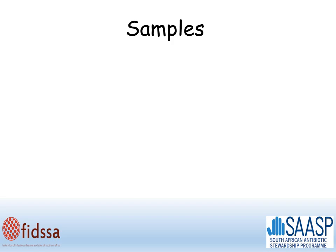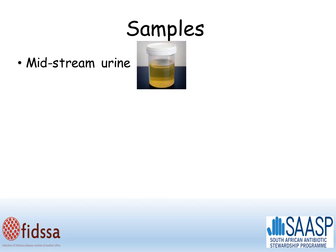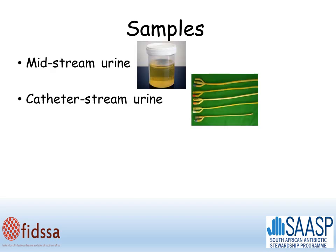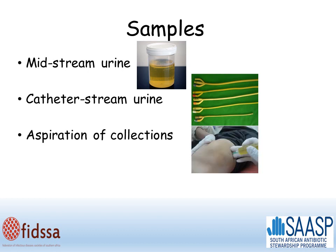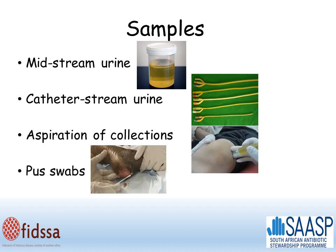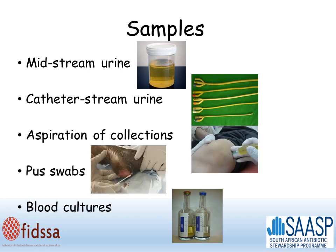In this lecture we're going to look at five different samples: the midstream urine, catheter stream urine, aspiration of collections, pus swabs, and blood cultures.